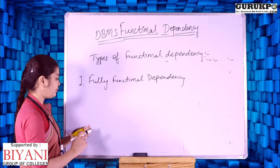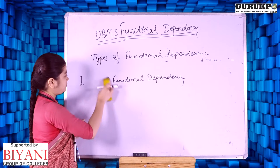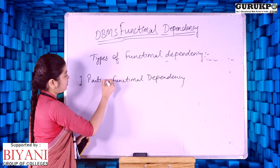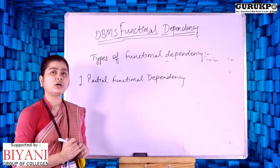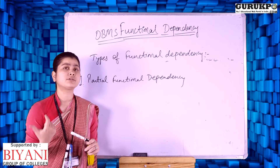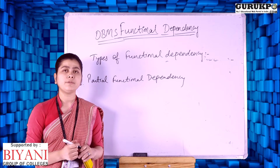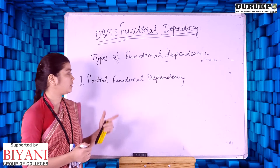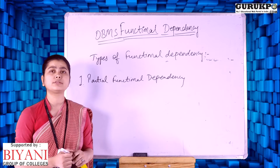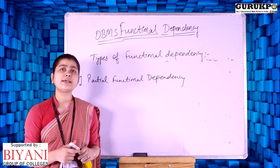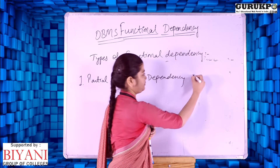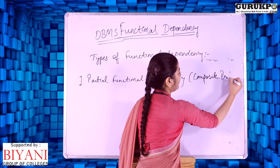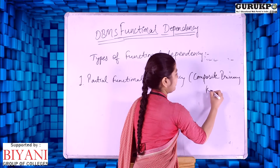In partial functional dependency, if all non-prime attributes partially depend on a composite primary key, then the functional dependency is known as partial functional dependency. Generally, partial functional dependency occurs in the case of a composite primary key. If we have a composite primary key, then we have partial functional dependency.